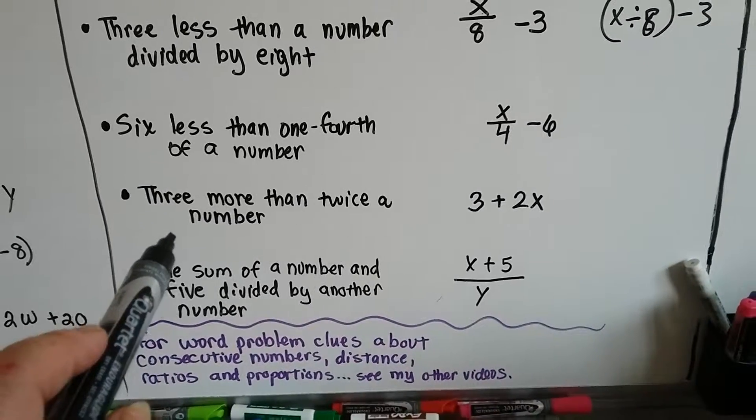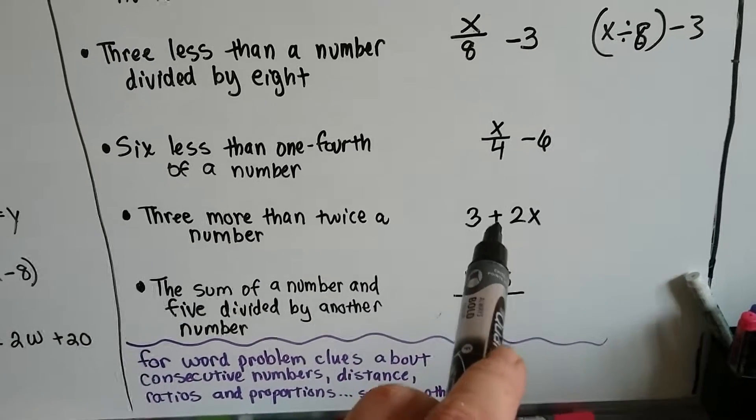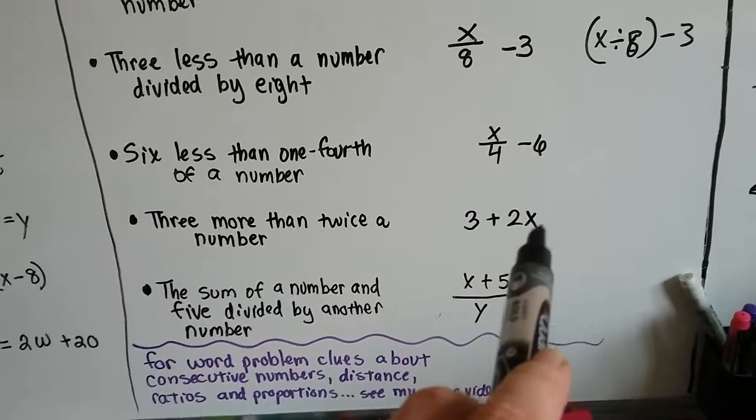3 more than twice a number, 3 more tells us 3 plus, and twice a number is 2 times a number, so it's 3 plus 2 times something.